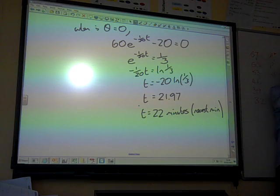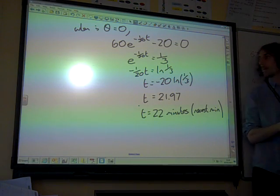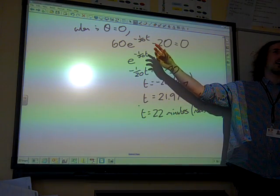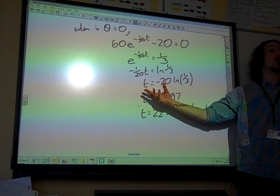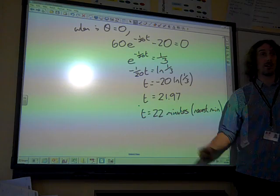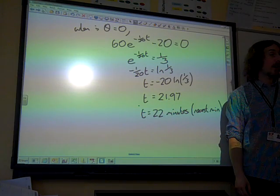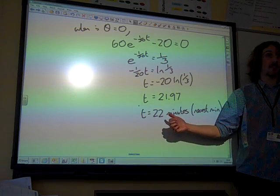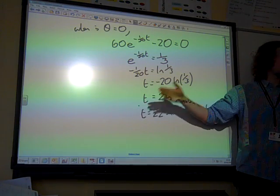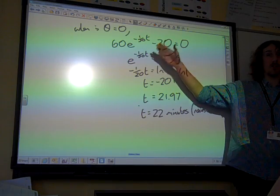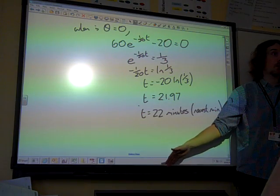And that would be our answer. There were quite a few people who had a negative value of k, which of course at this point here gave you a -21.97 minutes. And they'd bluffed their way through to say and therefore the answer was 22 minutes. But there's another warning sign that something simple was wrong earlier on. You should look for that and spot it.